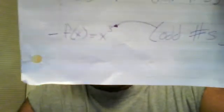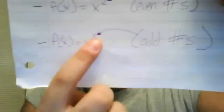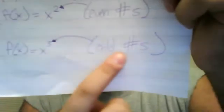This time, it's an odd number, so it'll relate to this parent function. f of x equals x cubed, and all odd numbers will relate to this parent function, which looks like this.